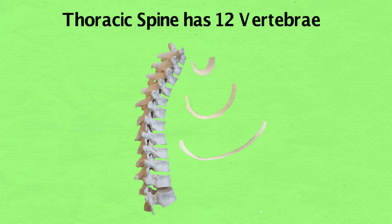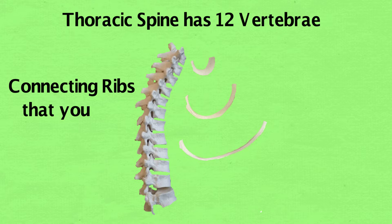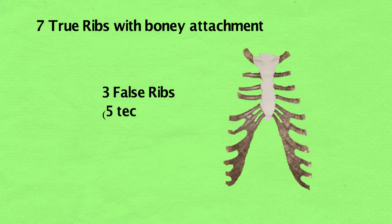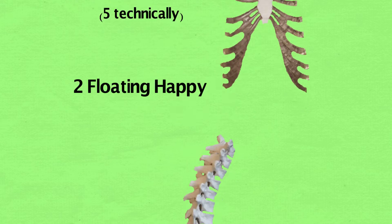Thoracic spine has 12 vertebrae, connecting ribs that you see right away. 7 true ribs with bony attachments, 3 false ribs, and 2 floating.